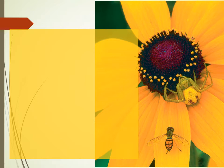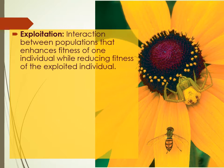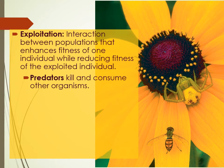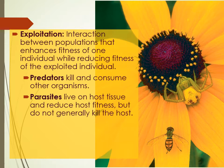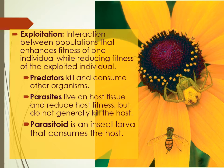When we talked about competition, it was an interaction where two species competing for a resource are both in some way harmed. Exploitation is an interaction where the fitness of one population is reduced while another is enhanced — one is benefiting and the other is being harmed. We have things like predators, parasites that live on host tissue and reduce its fitness but don't generally kill the host, parasitoids — insect larvae that develop inside a host and consume and kill it — and pathogens, which are diseases.